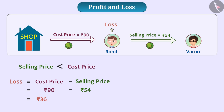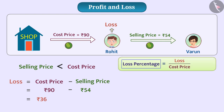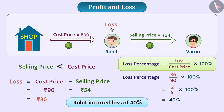Now, imagine how we can get the loss percentage. Like profit, loss is also calculated on the cost price, so again we consider the cost price as the base. We write the formula for loss percentage as: Loss Percentage = (Loss ÷ Cost Price) × 100%. Here, the loss percentage equals 36 divided by 90 multiplied by 100%, which equals 2/5 multiplied by 100%, equal to 40%. That is, Rohit incurred a loss of 40% in this transaction.